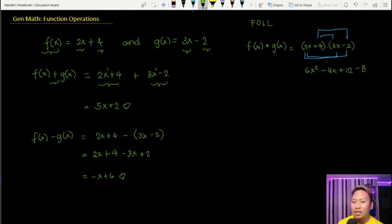What is 4 times 3x? We have 12x. And lastly, we have 4 times negative 2, which is negative 8. Then you just combine like terms. The terms that we can combine here are negative 4x and 12x. When they have unlike signs, you subtract them and copy the sign of the larger number. What is 12 minus 4? That is 8. Copy the sign of the larger number, which is 12. So we have 6x² plus 8x minus 8. You just got your product of the two functions.